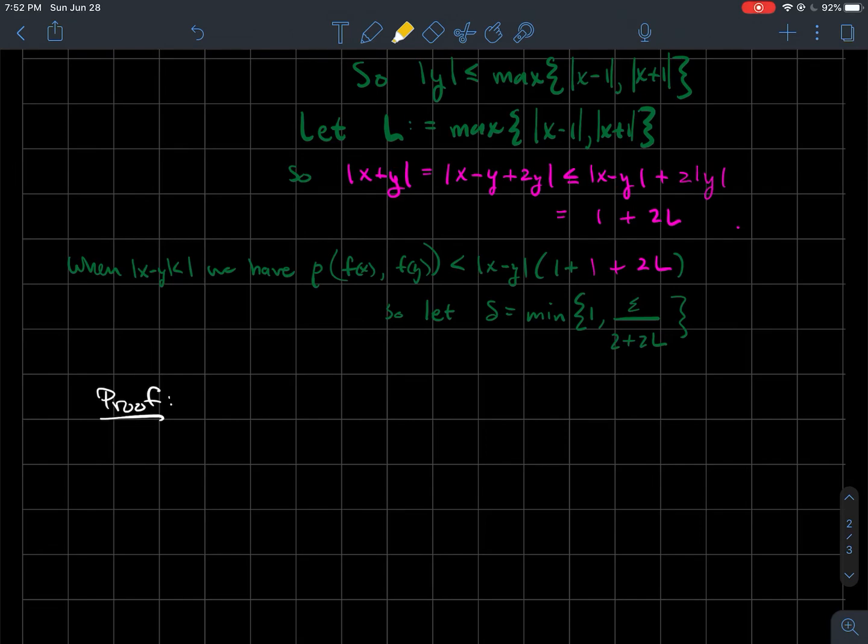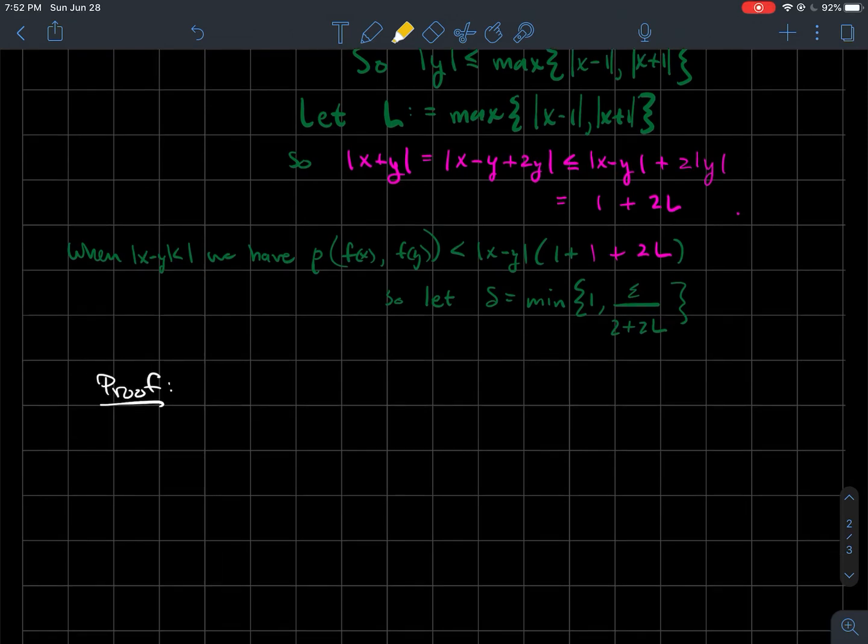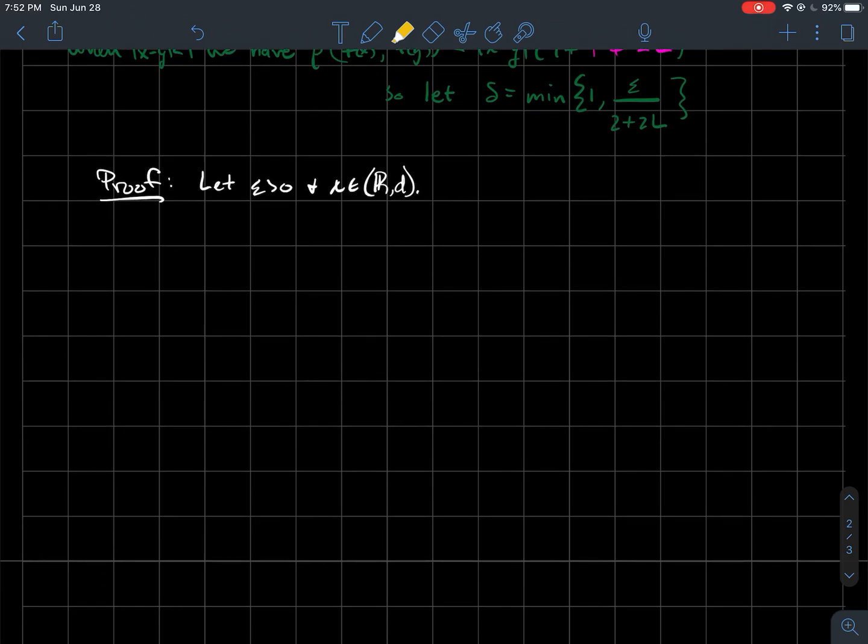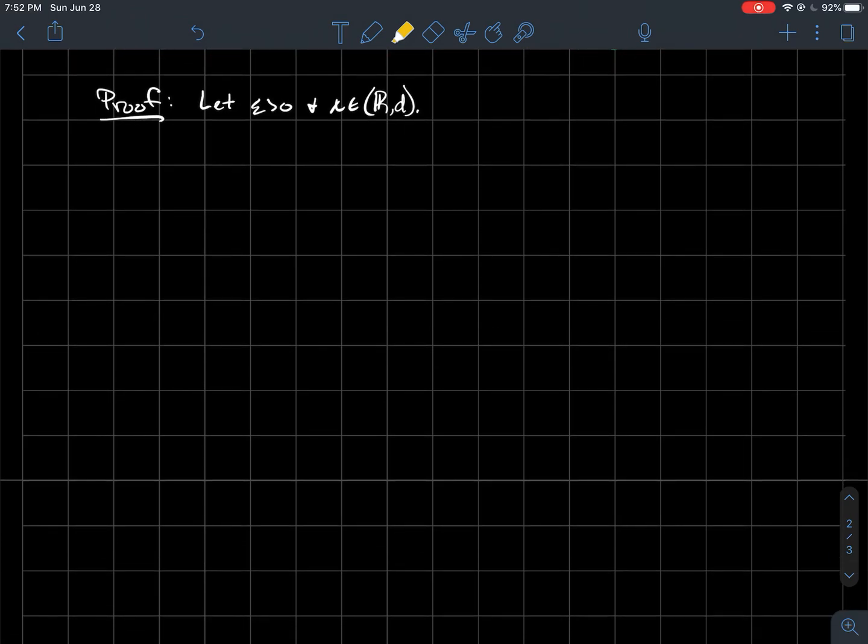So what's the actual proof look like? Remember we're working backwards. So what's the actual proof look like? So the first thing we'll do, let epsilon be a positive number, and let's fix a real number x that's on the real line with the usual metric. So let's choose delta to be the minimum of 1 and epsilon over 2 plus 2L.